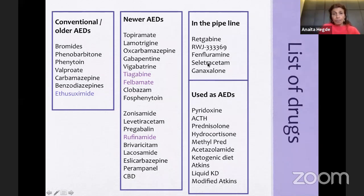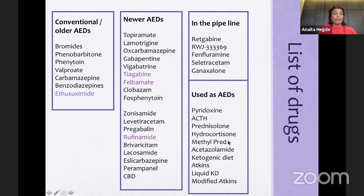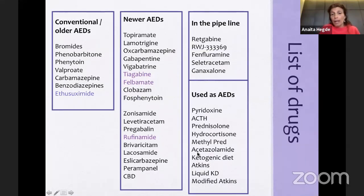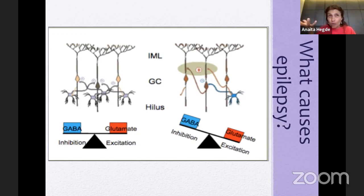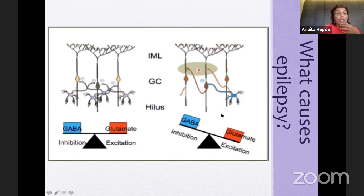There are also drugs in the pipeline like fenfluramine, and non-anti-epileptic drugs used as anti-epileptics such as pyridoxine, ACTH, prednisolone, hydrocortisone, methylprednisolone, acetazolamide (Diamox), and the ketogenic diet. Epilepsy is basically an imbalance of neurotransmitters: GABA is the inhibitory neurotransmitter and glutamate is the excitatory neurotransmitter. If something causes glutamate-mediated excitation to increase and GABA-mediated inhibition to decrease, you get an epileptic tendency. All our drugs work on different aspects of this — voltage-gated sodium channels, GABA receptors, SV2A receptors, calcium channels, AMPA receptors. It is important to know these different channels and which drugs work on them.